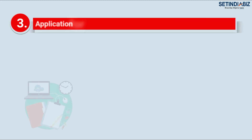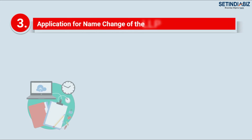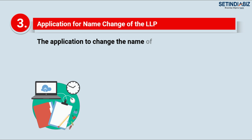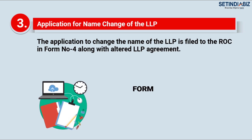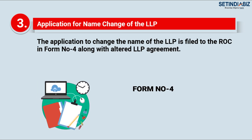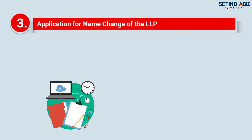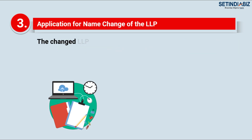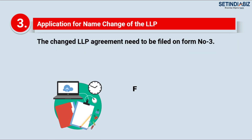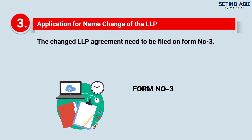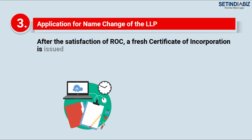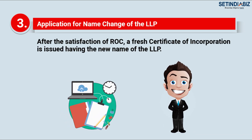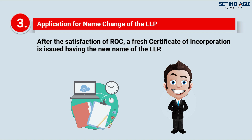Step 3: Application for name change of the LLP. The application to change the name of the LLP is filed to the ROC in Form 4 along with the altered LLP agreement. The changed LLP agreement needs to be filed in Form 3. After the satisfaction of the ROC, a fresh certificate of incorporation is issued having the new name of the LLP.